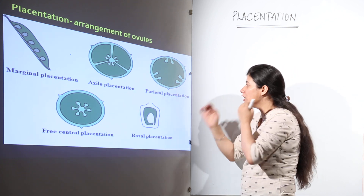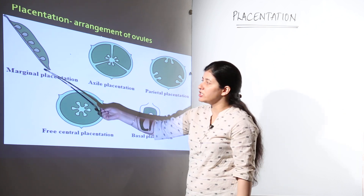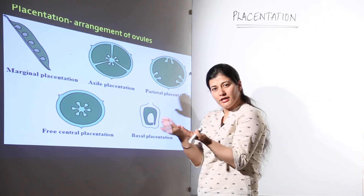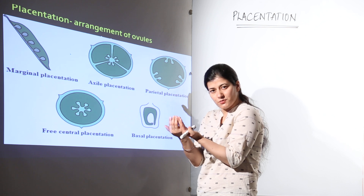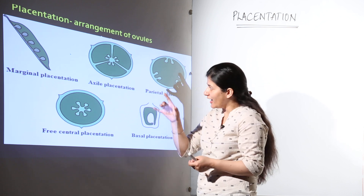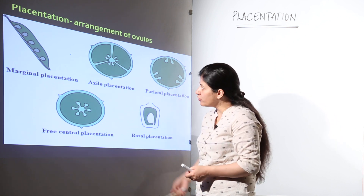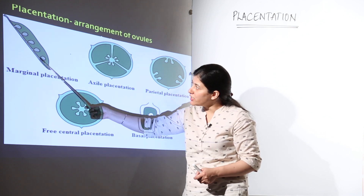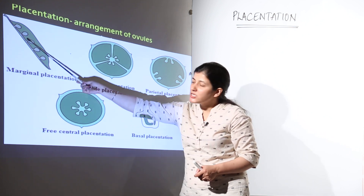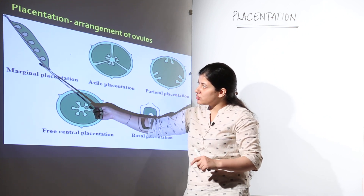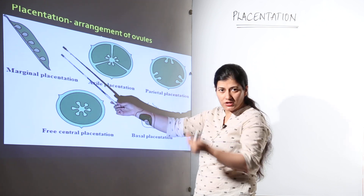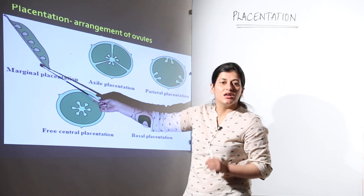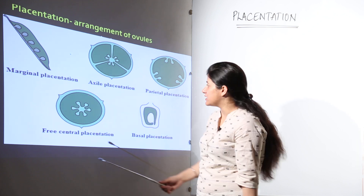What we see here is marginal placentation. There would be a pod, and the joining of the pod would be known as the margin. At that margin, the ovules will be attached. The placentation where the placenta attaches with the margin of the ovarian locule is known as marginal placentation.